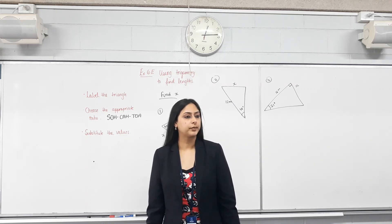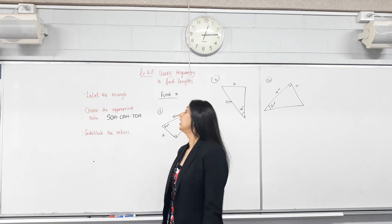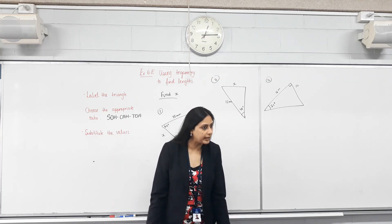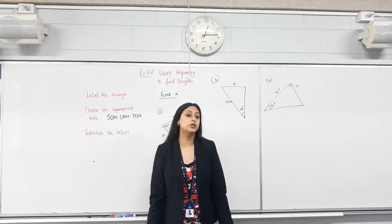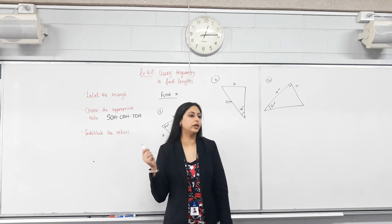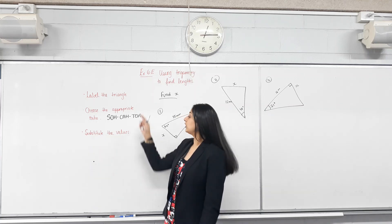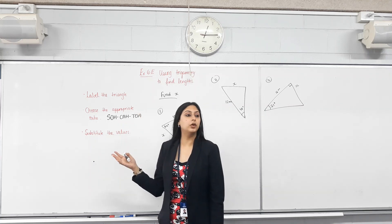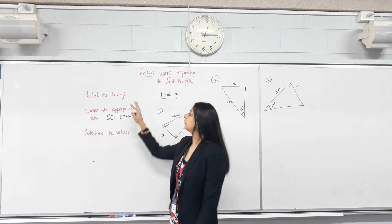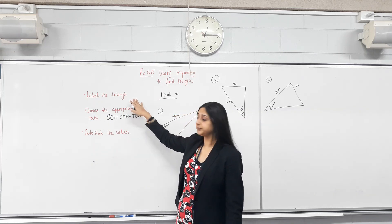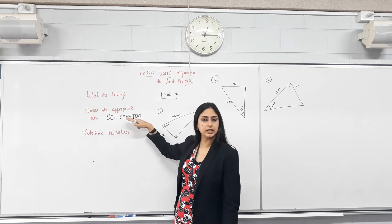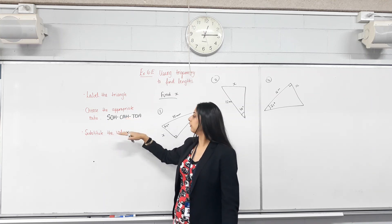Good morning. So moving on — we talked about some ratios called sine, cosine, and tangent last lesson. Today we're going to use them to find the missing lengths in a right-angled triangle. These are the steps you have to follow every time: first, label the triangle; then choose the appropriate ratio. Do you remember SOH-CAH-TOA from last lesson?